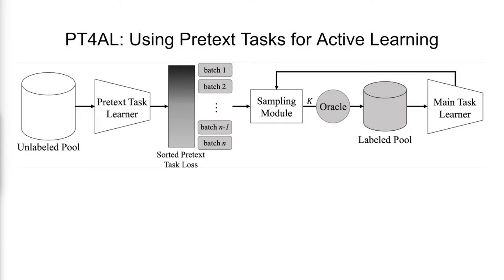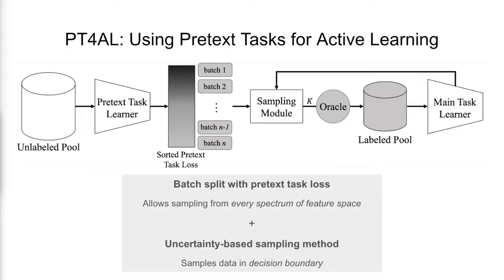PT4AL combines the best of two worlds of existing AL methods. The batch split with pretext task loss allows sampling from every spectrum of the feature space, while the uncertainty-based sampling method samples data in the decision boundary.